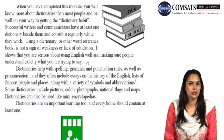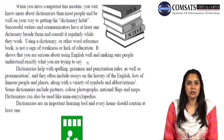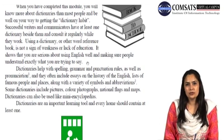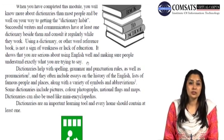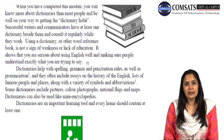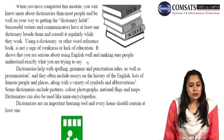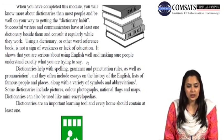This is an added benefit of a dictionary. If you look at the Oxford Advanced Learner's Dictionary, the latest version, it also has a lot of information on how English started off. There are many different types of Englishes; towards the end of the dictionary, there are allied pages informing you about the history of various words and different types of Englishes used all over the world including Australian, Canadian, South African, British and American English. Some dictionaries include pictures, color photographs, national flags and maps. Dictionaries can also be used like many encyclopedias.